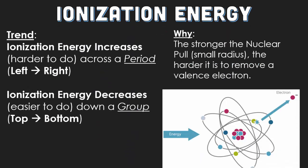The trend for ionization energy is that it increases across a period as you go from left to right. Ionization energy decreases down a group, from top to bottom. The reason why, the stronger the nuclear pull, the harder it is to remove a valence electron. So the more principal energy levels that the atom has, the weaker the pull will be, and the easier it will be to remove a valence electron.